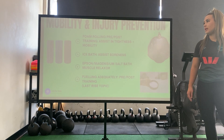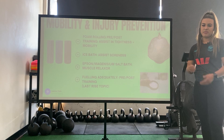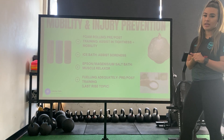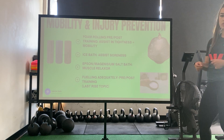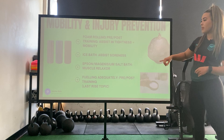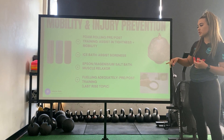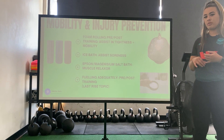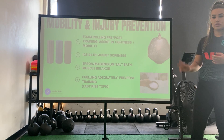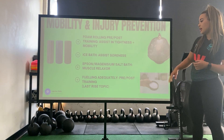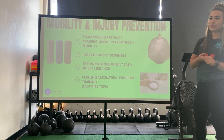Touching base on mobility and injury prevention from session one: foam rolling pre and post-session. You can get foam rollers from Kmart, Target, or any sports shop — or even use a rolling pin from the kitchen. All it does is increase blood flow to those areas. Ice baths assist with soreness — hot and cold contrast to flush blood flow and lactic acid buildup. Epsom salts, available at Coles or Woolies, relax the muscles. You can add lavender oil to really wind down. And make sure you're fueling adequately — post-training, pre-training, and throughout the day with breakfast, lunch, dinner, and snacks.